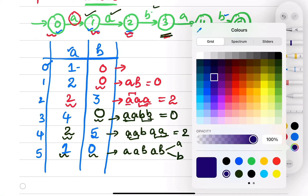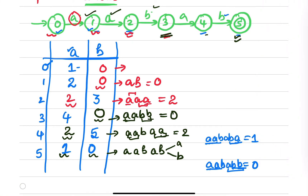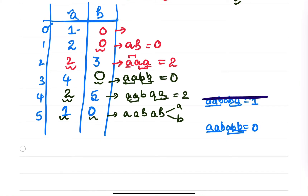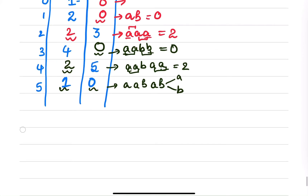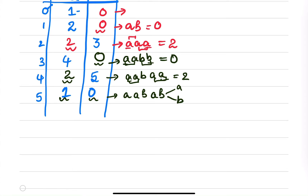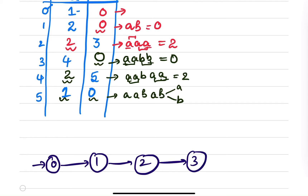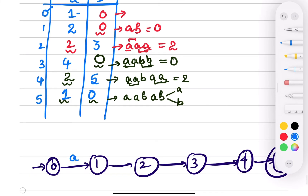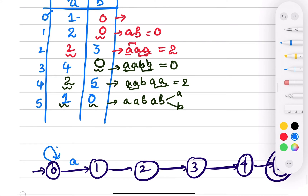Now you just have to create an automata from the transition table and pass the text as input. Let me draw a new automata. We have states zero, one, two, three, four, and five is the final state. From zero on input a you reach one, and on input b you stay at zero. From one on input a you reach two, and on input b you go to state zero.